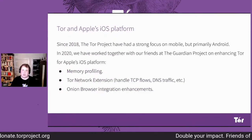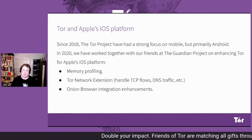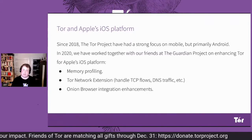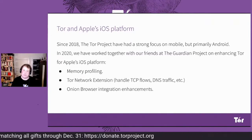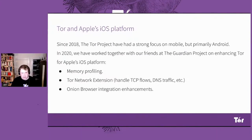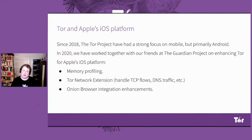As Matt talked about, in the Tor project we've had a very big focus on mobile first. It has primarily targeted the Android platform from Google, but here in 2020, we've worked with our friends at the Guardian project on enhancing Tor for Apple's iOS platform. Some of the things we've been doing is working with them on integration issues, how they work with this new way of embedding Tor as a library, and on a network extension, which is all about extracting TCP flows, handling DNS traffic, sending it through Tor, and especially memory profiling.